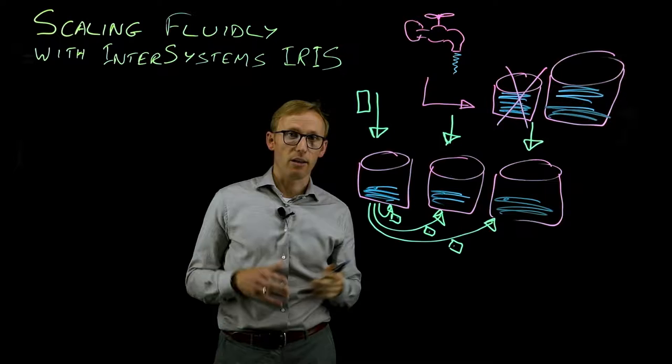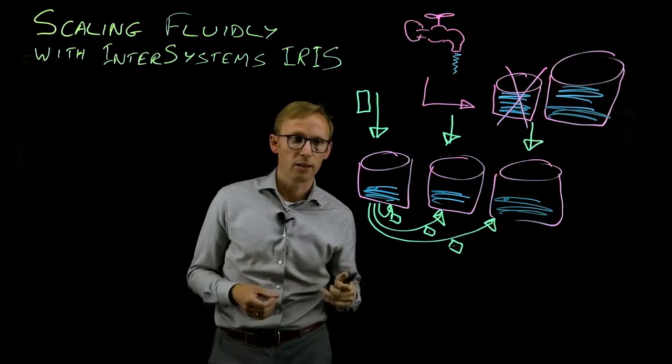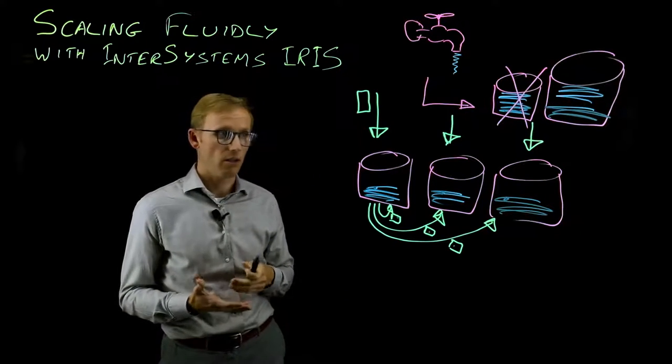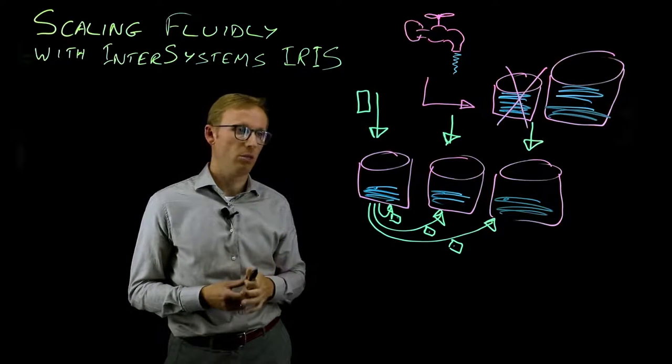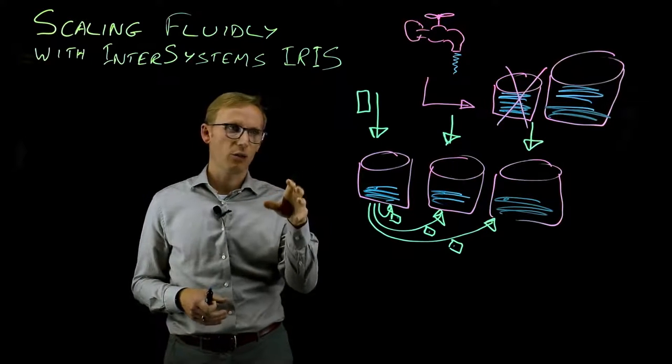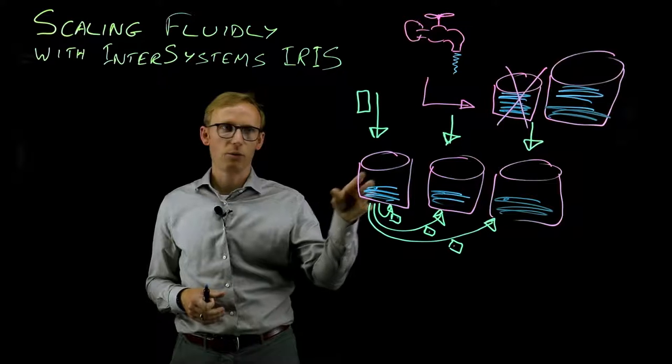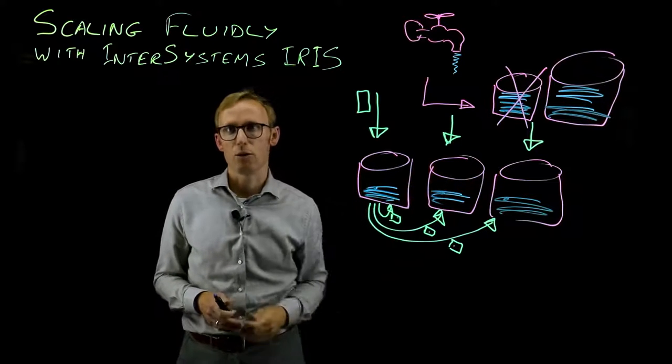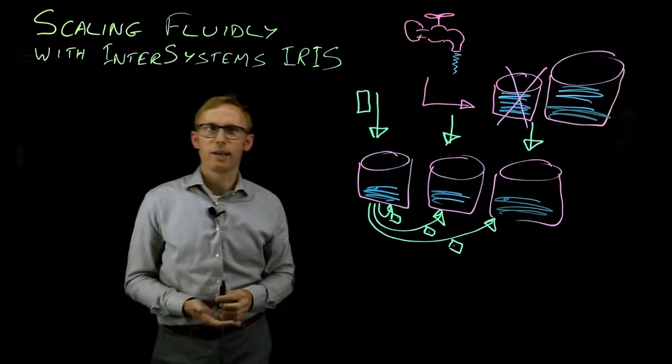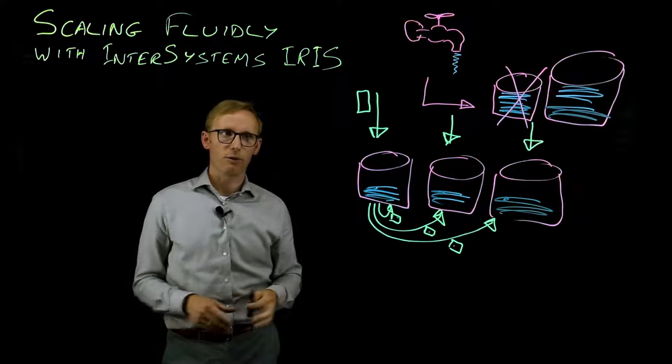This is where the distribution of your data comes in. That's what we call the shard key. The shard key is a choice you can make when you define your table that identifies a particular column that InterSystems IRIS will use to decide which record goes where. By default it's automated and it's completely random, which is fine for many cases.